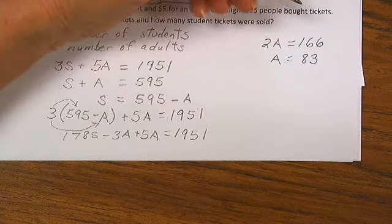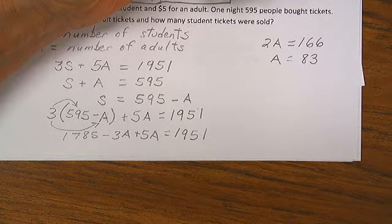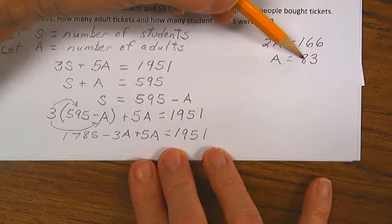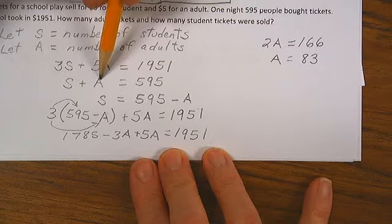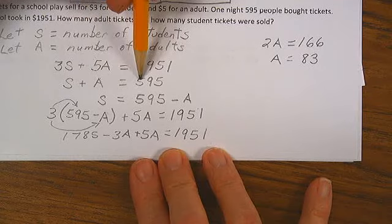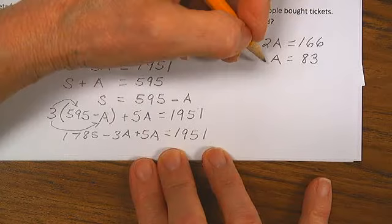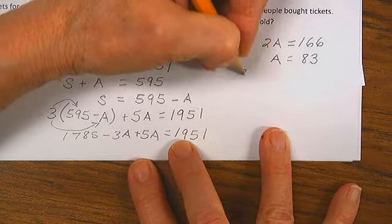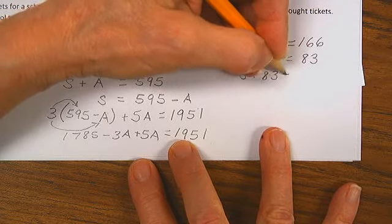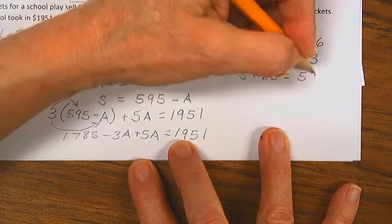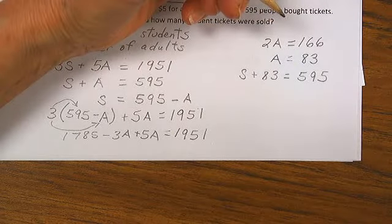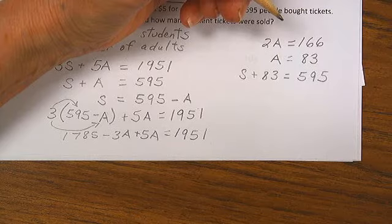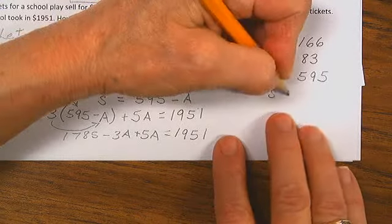Let's see, 166 divided by 2 should be 83. Good. Well, if we had 83 adults and the total number of people was 595, then the number of students plus 83 should equal 595. Now I subtract 83 from each side. 595 minus 83 and I get 512 students.